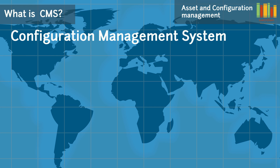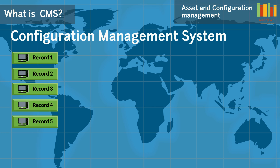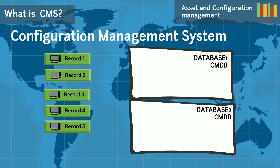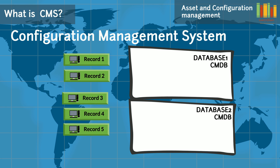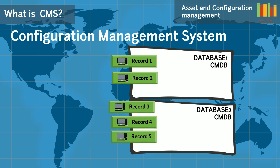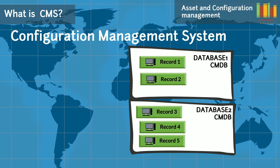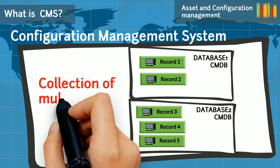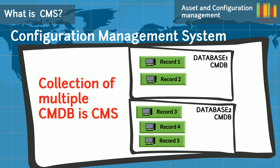One of the most common terms in configuration management is CMS, which stands for Configuration Management System. Each configuration item, referred to as a CI, will have its record stored in a database. This database is referred to as a Configuration Management Database, commonly known as CMDB. In simple terms, CMS is a collection of multiple configuration management databases consolidated together.